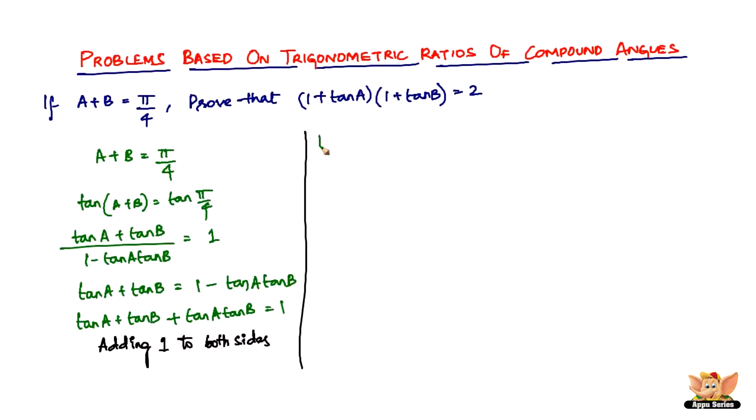Adding 1 to both sides, we will have 1 plus tan A plus tan B plus tan A times tan B, and you add 1 to the right-hand side as well, so it becomes 1 plus 1 equals 2.